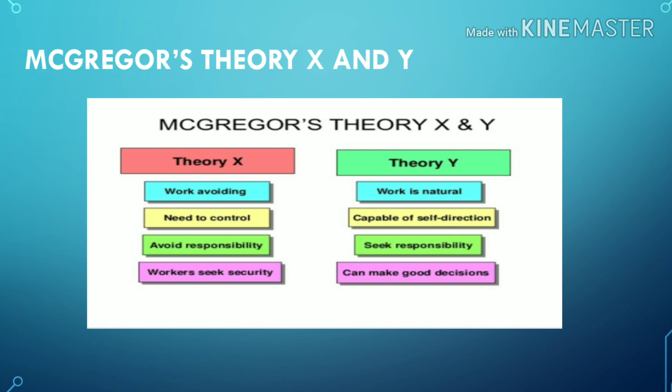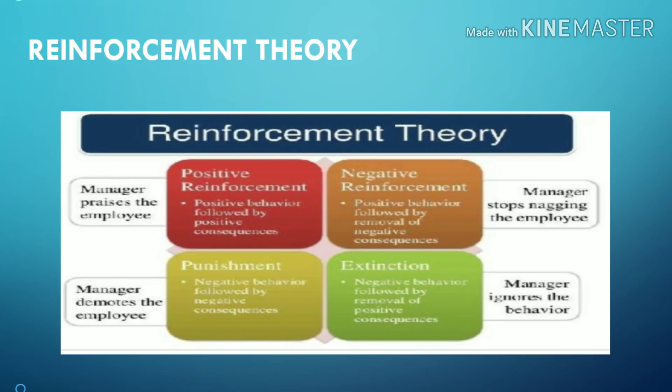Next is McGregor's Theory X and Theory Y. Theory X consists of: work avoidance, need to control, avoid responsibility, and workers seeking security. Theory Y includes: work as natural, capable of self-direction, seek responsibility, and can make good decisions.